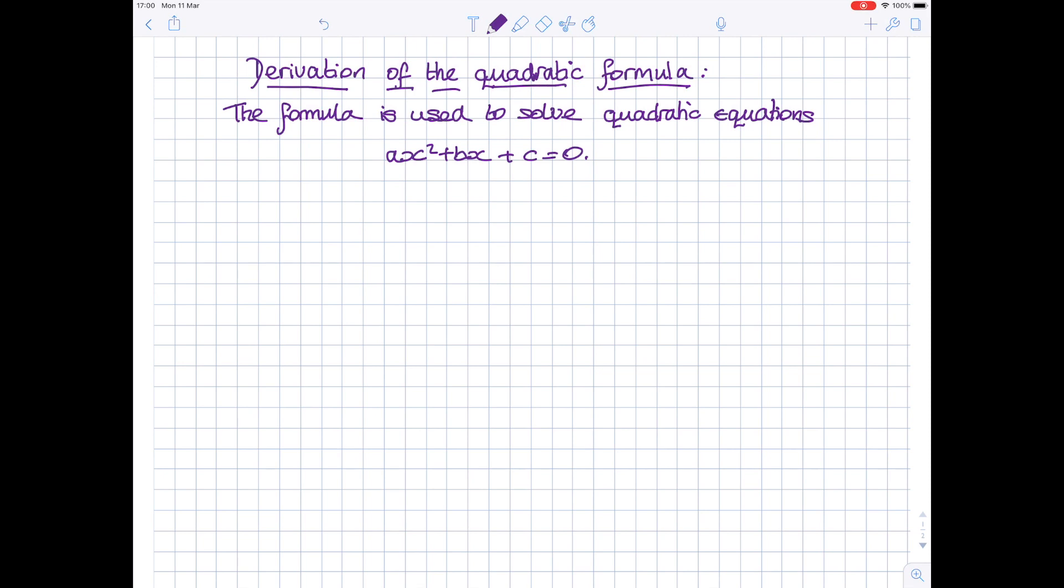There may or may not be an x term, and there may or may not be a number. However, the quadratic equations are written as ax squared plus bx plus c equals zero. We call a the coefficient of x squared, we call b the coefficient of x, and c is the constant or the number.